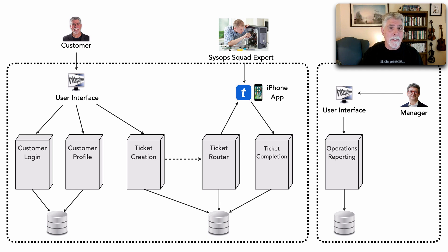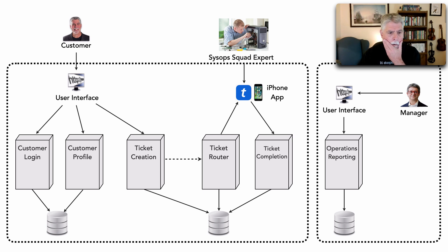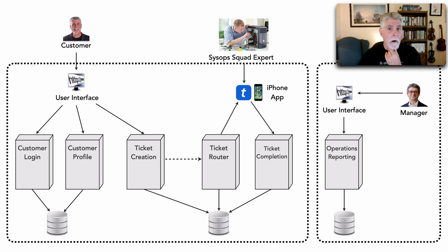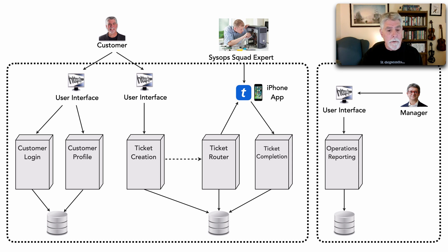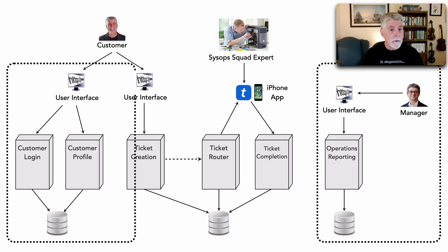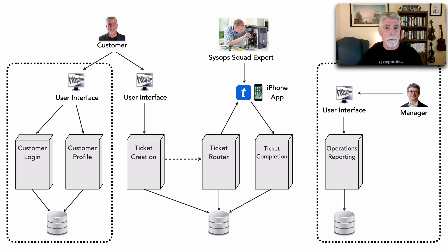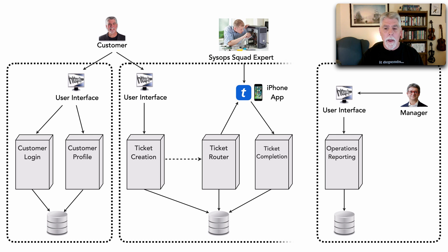This is where the architectural characteristics live — they need to be shared because of those dependencies. One way to address this is to create a new, separate user interface for ticket creation, distinct from the one used for customer profile and login. If we do that, customer functionality becomes completely independent of everything else — its own architectural quantum — and now we have two architectural quanta.